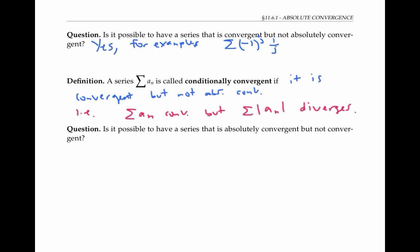Next question for you: is it possible to have a series that's absolutely convergent but not convergent? This is a little trickier, but please pause the video for a moment and think about your answer. The answer to this one is no. It's a fact that every absolutely convergent series is convergent.